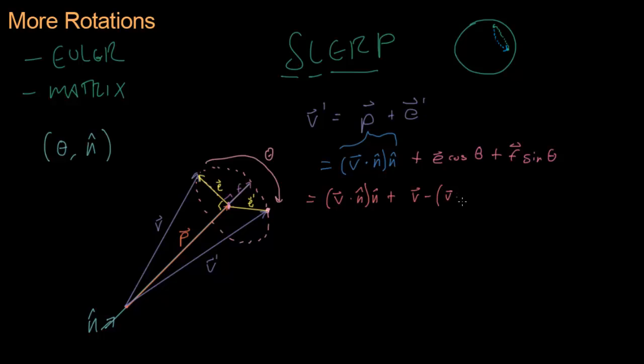That's V minus V dot N times N, and that entire thing is multiplied by cosine theta. So this E right here becomes all of that, and then F is a vector that's perpendicular to N and V, and we know how to get perpendicular vectors, that is N cross V, N cross V, sine theta.